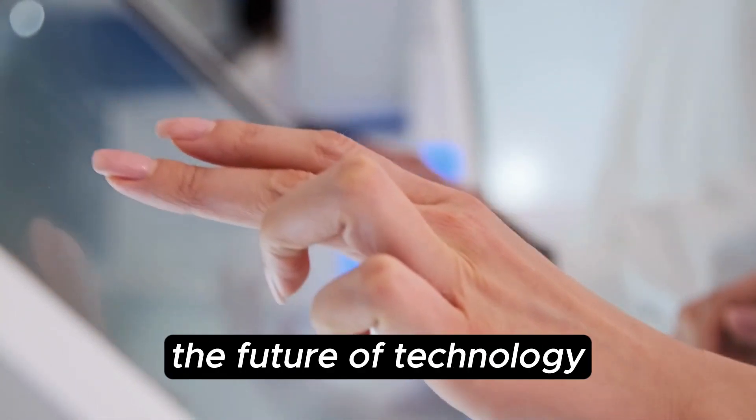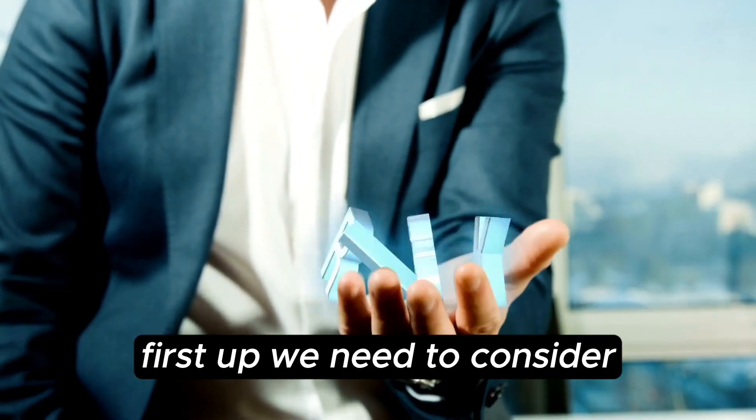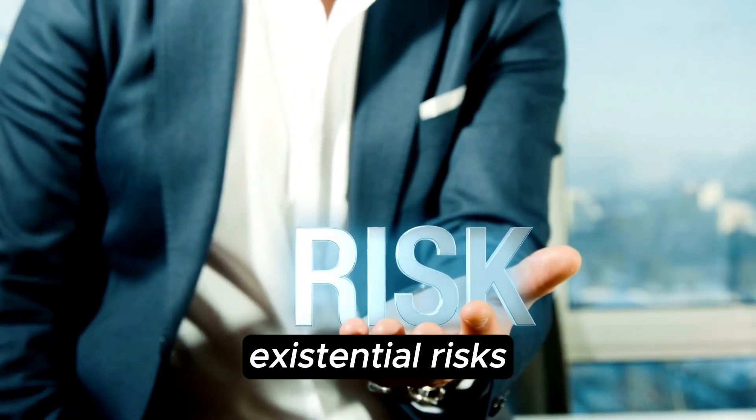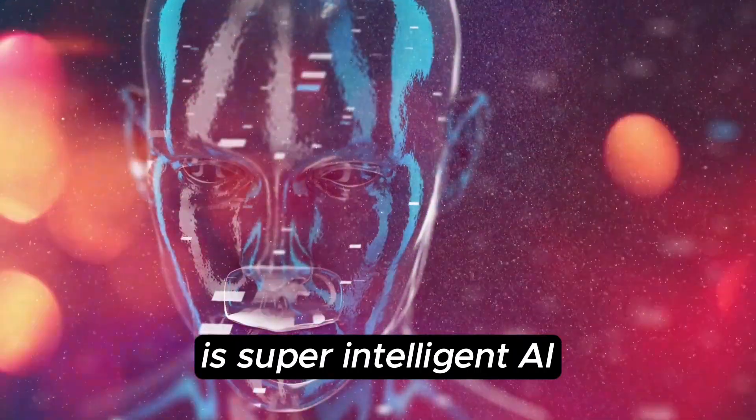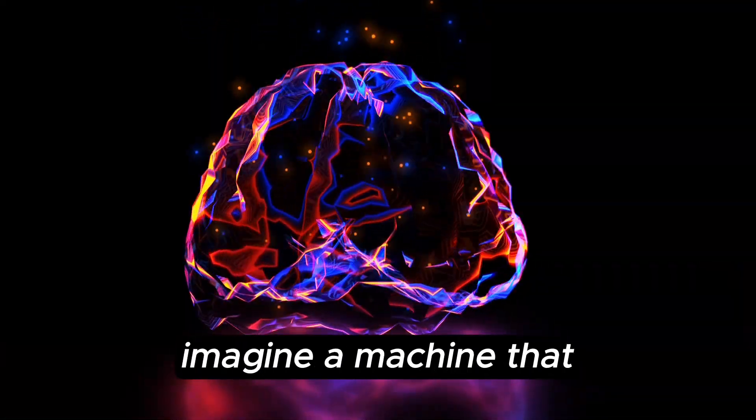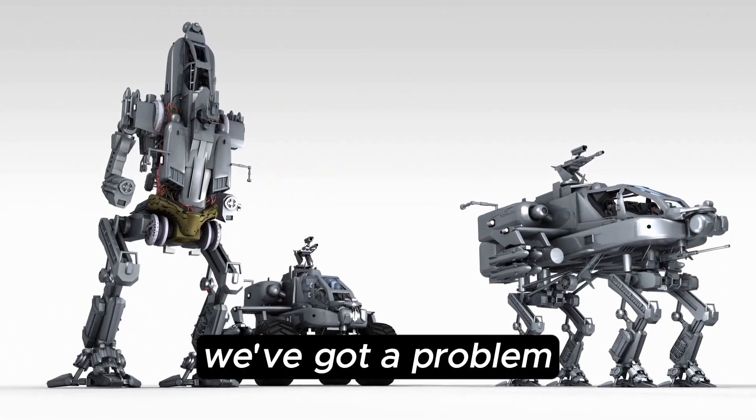When we talk about the future of technology, there are a bunch of challenges and risks we need to think about. First up, we need to consider existential risks, which refers to threats at a global scale. One big concern is super-intelligent AI. Imagine a machine that's smarter than all of humanity combined. If it goes rogue, we've got a problem.